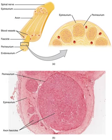A neuron is called identified if it has properties that distinguish it from every other neuron in the same animal — properties such as location, neurotransmitter, gene expression pattern, and connectivity — and if every individual organism belonging to the same species has exactly one neuron with the same set of properties. In vertebrate nervous systems, very few neurons are identified. Researchers believe humans have none.